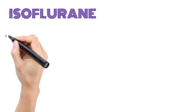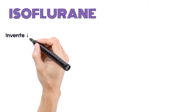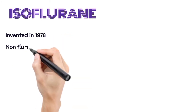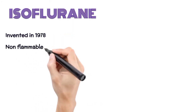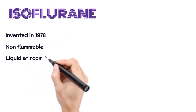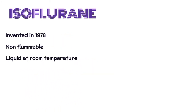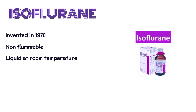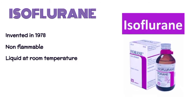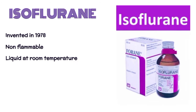Isoflurane was invented in 1979. It is non-flammable; it vaporizes readily but is a liquid at room temperature. Isoflurane is a halogenated ether — a clear, colorless, stable liquid with a pungent, musty, ethereal odor requiring chemical stabilizers.